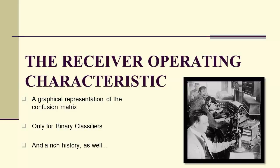The receiver operating characteristic is a graphical representation of the confusion matrix. It only works for binary classifiers, but it has a very rich history.